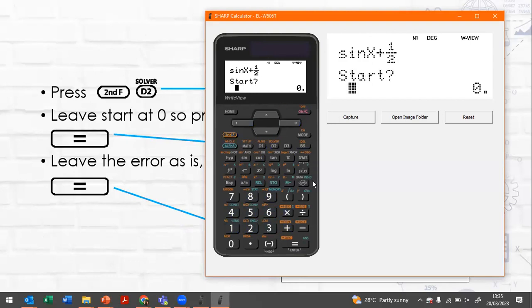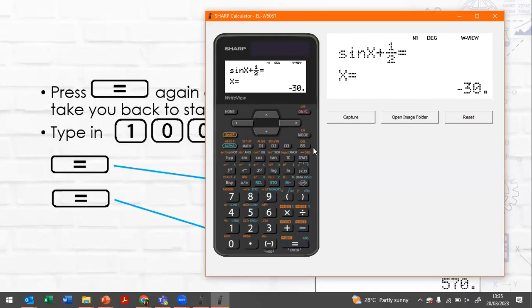And then we're going to press second function and d2 again. We'll start at zero so we'll just press equals. We'll leave the error as is again so we'll just press equals and you can see that it gives us a solution of minus 30. Now if we press equals again it will take us back to the start.